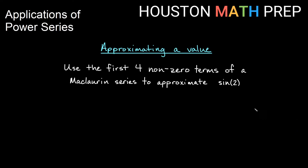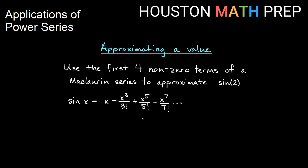Let's look at another one. Say we want to evaluate sine of 2 and approximate that — we'll use the first four non-zero terms. Just remember that sine is the odd polynomial, it is alternating: x minus x cubed over 3 factorial plus x to the 5 over 5 factorial, etc. So the first four non-zero terms would go out to the x to the 7 term.